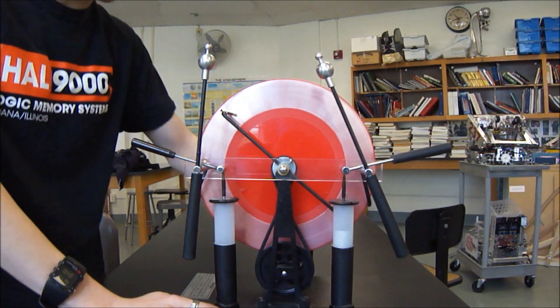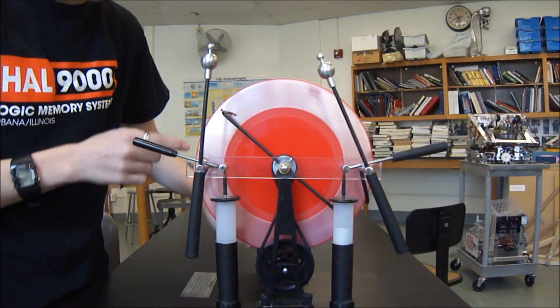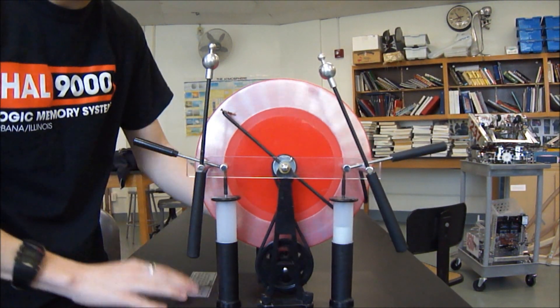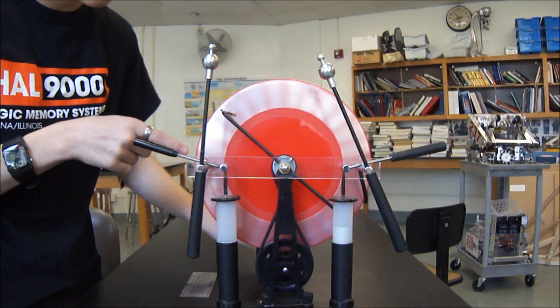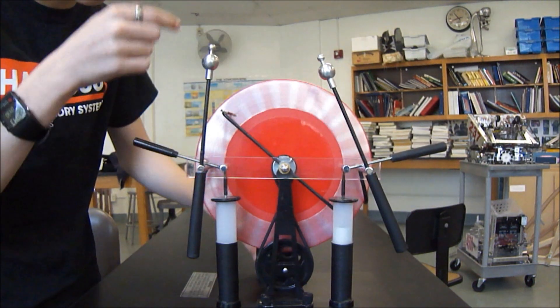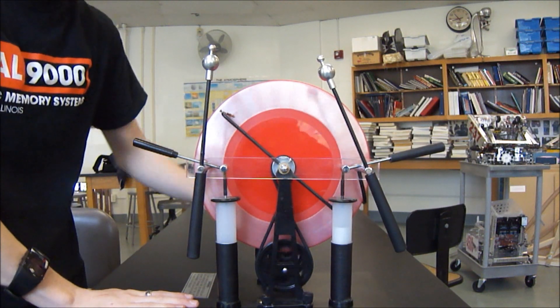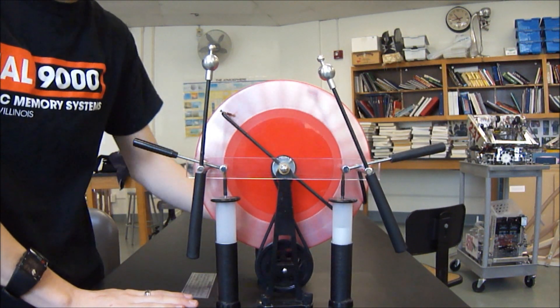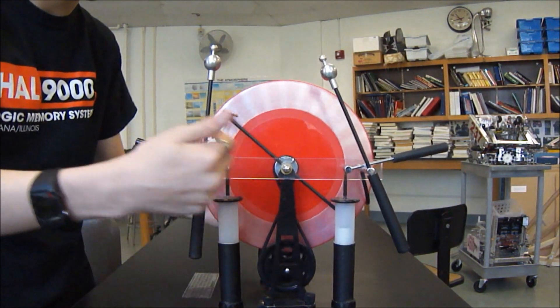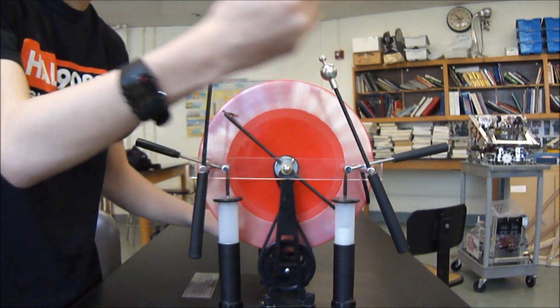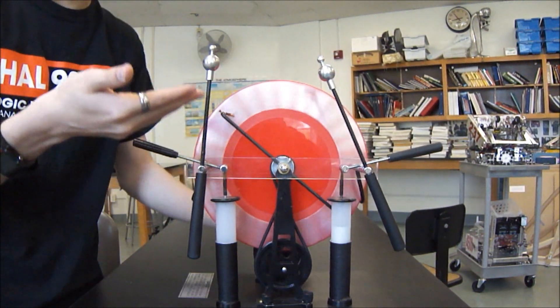So as I spin the wheel there are tiny brushes here on either side that scrape along the flywheel picking up electrons from the foil. As I do this, electrons are being pulled from one side and put on the other, so it's creating a voltage difference—there's fewer electrons here than there are over here.